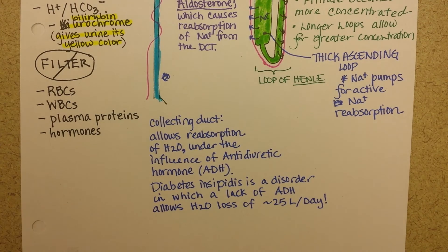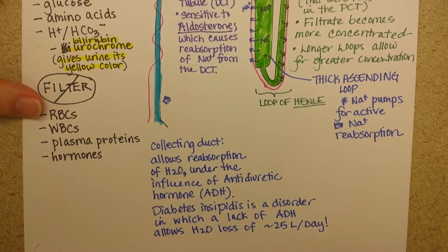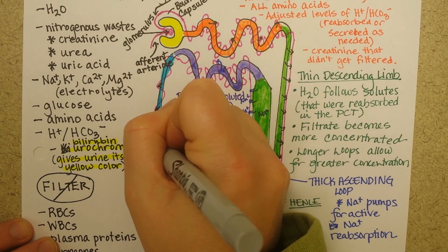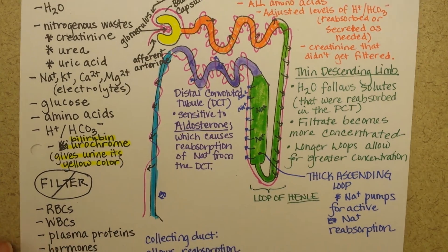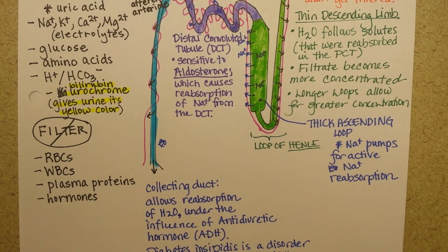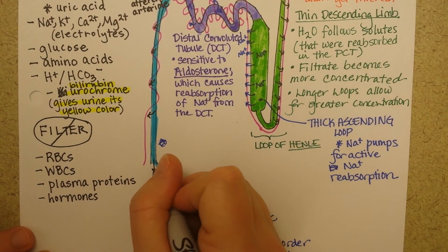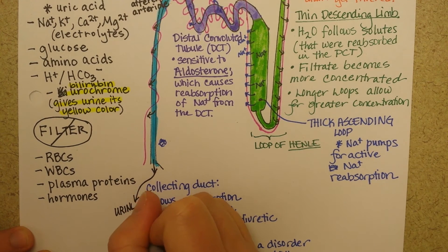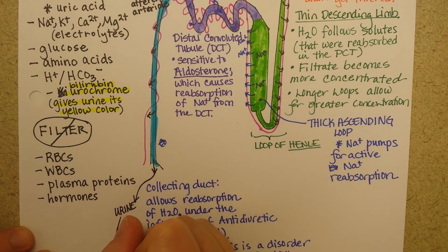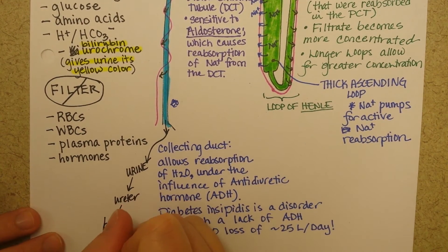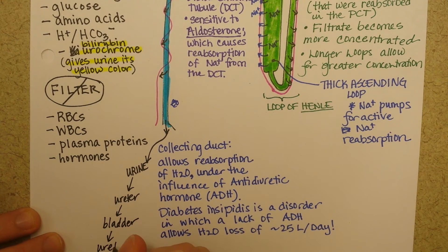We used the black pen for water coming out, so we'll do that here too. This is where the water has its final chance for reabsorption. Any water that comes out the bottom of the collecting duct is considered urine, and it goes down the ureter, then from there to the bladder, and then exits the body via the urethra.